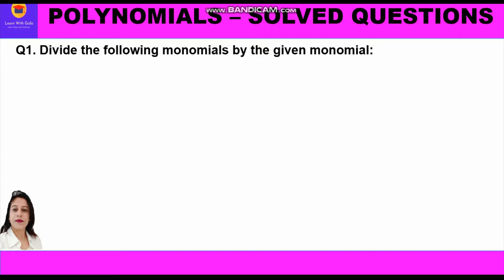Let's start with the first question: divide the following monomials by the given monomial. The first part is 6x³ divided by 3x². We know that 6 and 3 cancel to give 2, and x³ divided by x² gives x, so the answer is 2x.